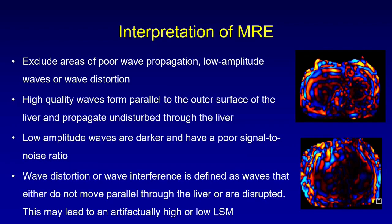When interpreting MRE, first look at the color wave map. Exclude areas of poor wave propagation, low amplitude waves, or wave distortion. A high-quality wave forms parallel to the outer surface of the liver and propagates undisturbed through it. Low amplitude waves are darker with a poor signal-to-noise ratio. Wave distortion is defined as waves that do not move parallel through the liver or are disrupted, and may lead to artifactually high or low LSM values.